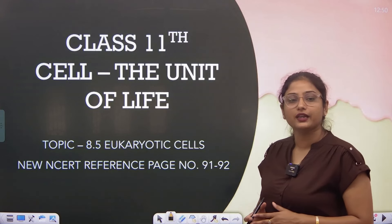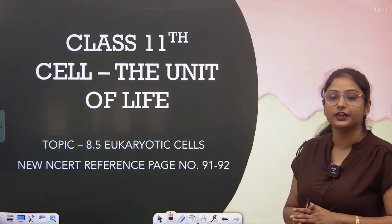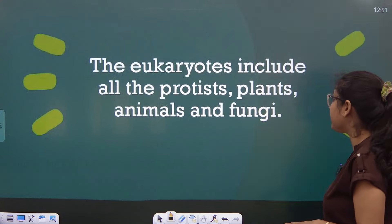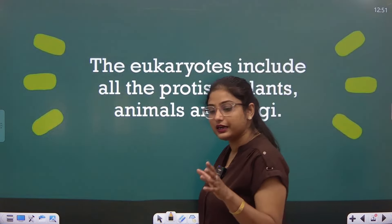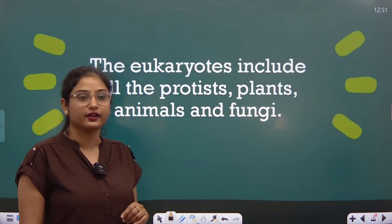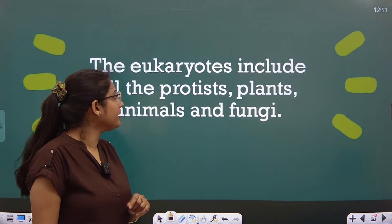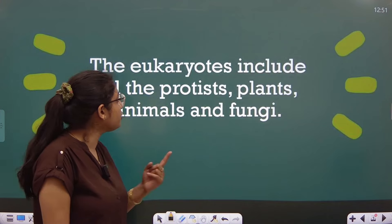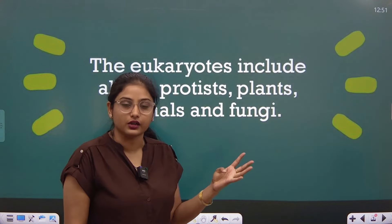New NCERT reference page number is 91-92 where it is given. So we are beginning with the introduction of eukaryotic cells that is given in your NCERT in a small paragraph. The eukaryotes include all the protists, plants, animals, and fungi.